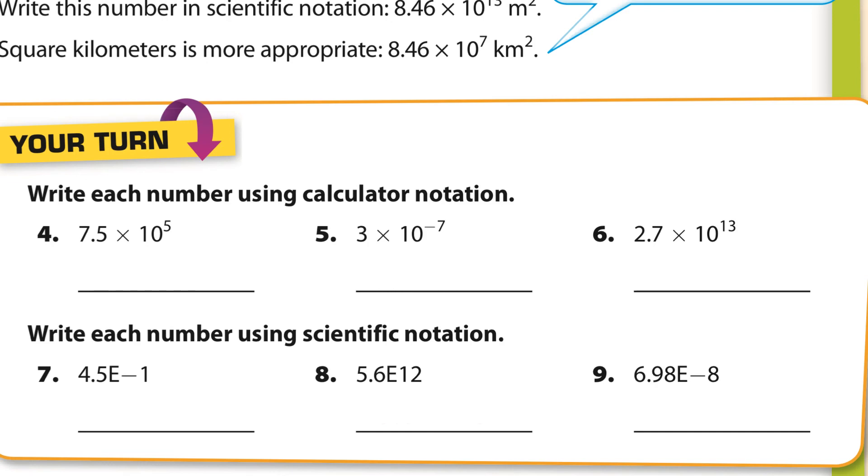Okay. Try it out. Pause it. Okay. Now, that one's 3E negative 7. 2.7E 13. This one's 4.5 times 10 to the negative 1st. And this is 5.6 times 10 to the 12th. And this is 6.98 times 10 to the negative 8th. And so, there you go.